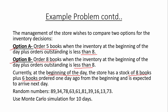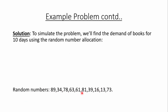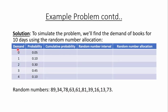To simulate the problem, we will find the demand of books for 10 days using random number allocation. We draw a table with the demand values 0, 1, 2, 3, or 4 and their corresponding probabilities as given in the problem. We first calculate the cumulative probability. We need to be cautious while finding the random number interval — if the cumulative probability is 0.05, we move the decimal two places ahead to get 5. We left out the 5th value and the random number interval will be from 0 to 4.